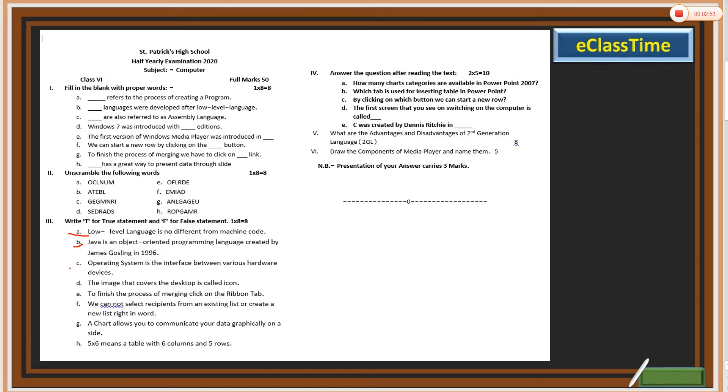C: Operating system is the interface between various hardware devices. D: The image that covers the desktop is called icon, true or false. E: To finish the process of merging, click on the ribbon tab. F: We cannot select recipient from an existing list or create a new list right in Word, whether true or false.